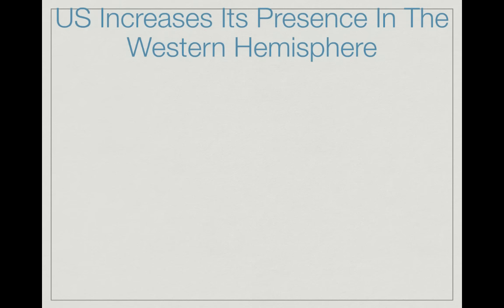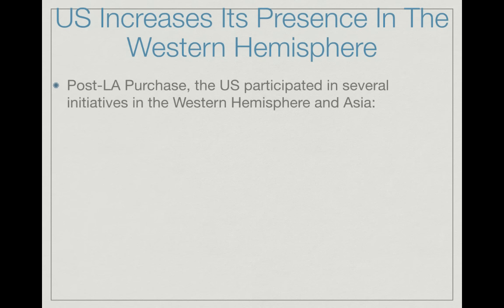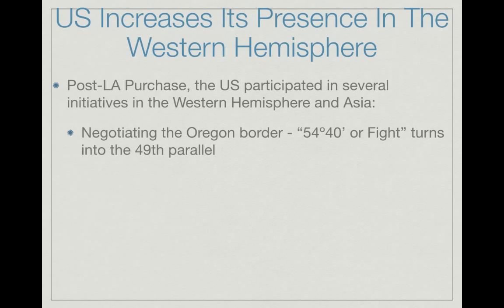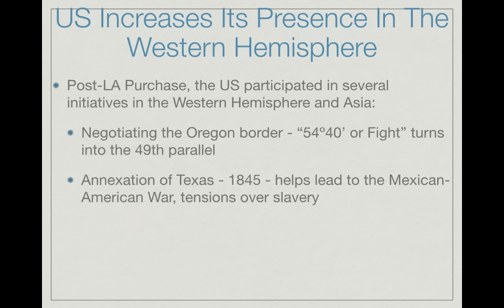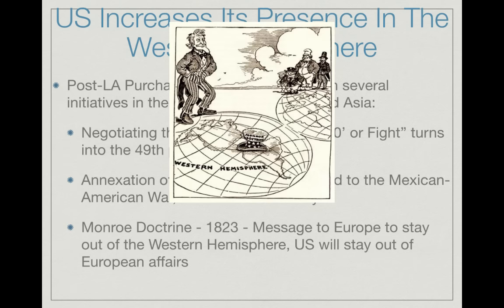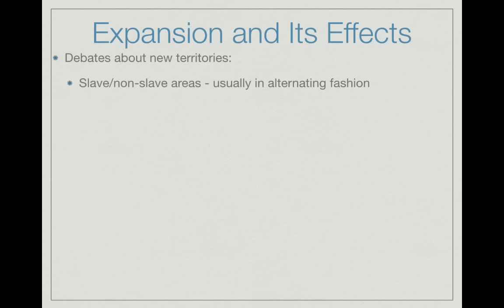Post-Louisiana Purchase, the U.S. increased its presence in the Western Hemisphere. The U.S. negotiated the Oregon border — James K. Polk threatened '54-40 or fight' with Britain over the Oregon Territory but ultimately settled on the 49th parallel. The annexation of Texas in 1845 helped lead to the Mexican-American War and tensions over slavery. In 1823, Secretary of State John Quincy Adams wrote the Monroe Doctrine, a message to Europe to stay out of the Western Hemisphere — in return, the U.S. would stay out of European affairs.